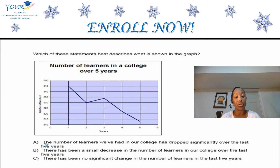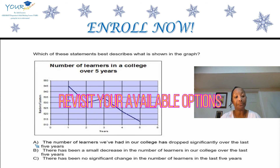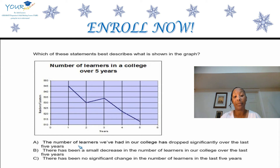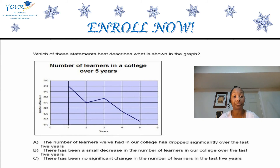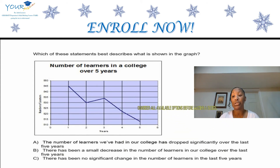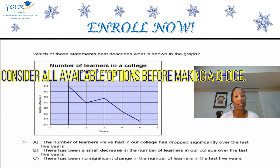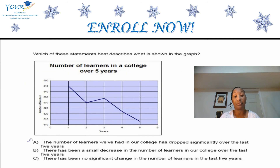Now we want to choose an option that represents what this data is displaying. Looking at Option A — the number of learners in our college has dropped significantly over the last five years — it appears that this information is actually true. We're not entirely sure yet, but it appears this will work for us. We want to continue looking at our other options as well, so we'll hold out on Option A for now since there may be a possibility it's correct.